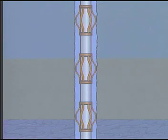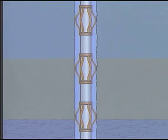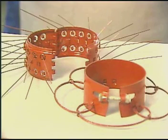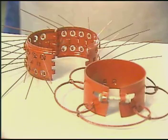Several techniques which are often combined are pipe centralization to allow uniform displacement of the mud by the cement, pipe movement — either reciprocation or rotation with scratchers to improve displacement in enlarged hole areas — and the high displacement rates and turbulent flow regime mentioned earlier.